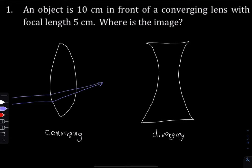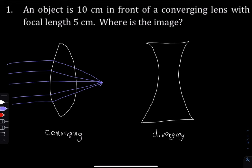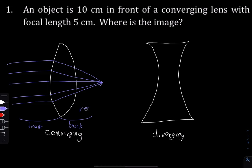So the light all converges together. We're going to call this the front of the lens and then this is the back of the lens. The image that's going to be formed is going to be in the back of the lens, so we're going to call this a real image for a converging lens. If you had the object facing upward, it's going to be facing downward — the image is going to be inverted. Real images are always inverted. That's a converging lens.